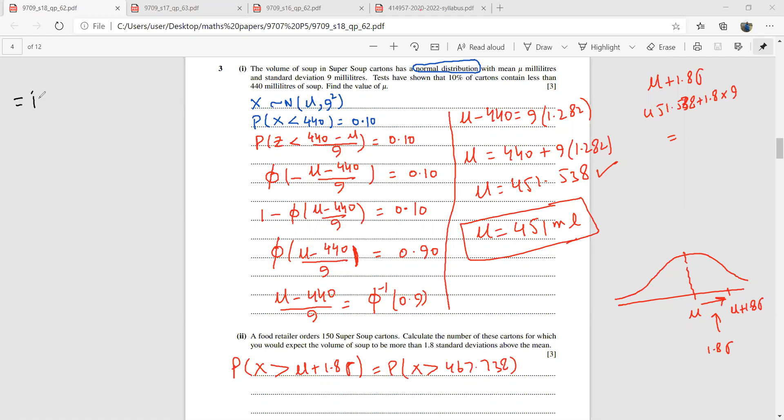Let us standardize this. This would become probability z is greater than 467.7 minus 440, and then you have 9 here. I'll be using its exact value. What was the mean? Oh, thank you, you have been a great help here. The mu was 451, thank you very much.